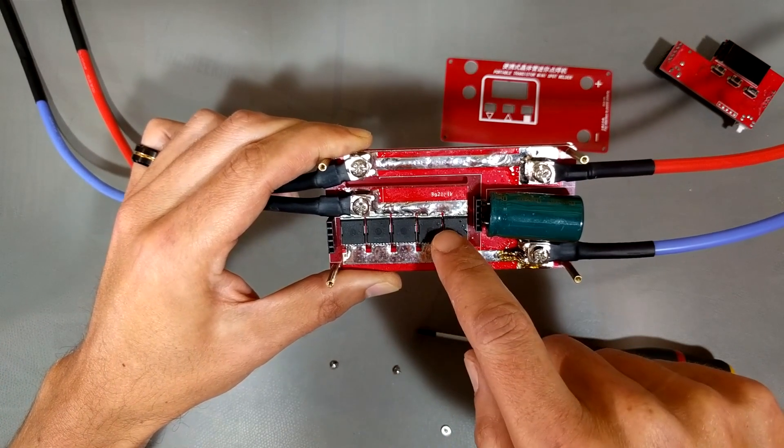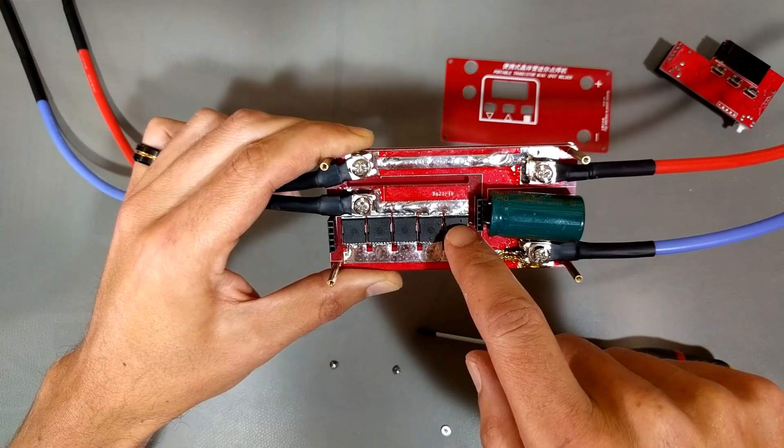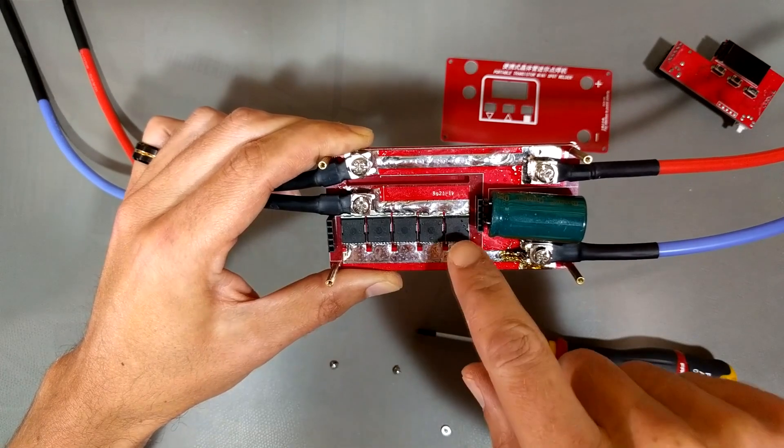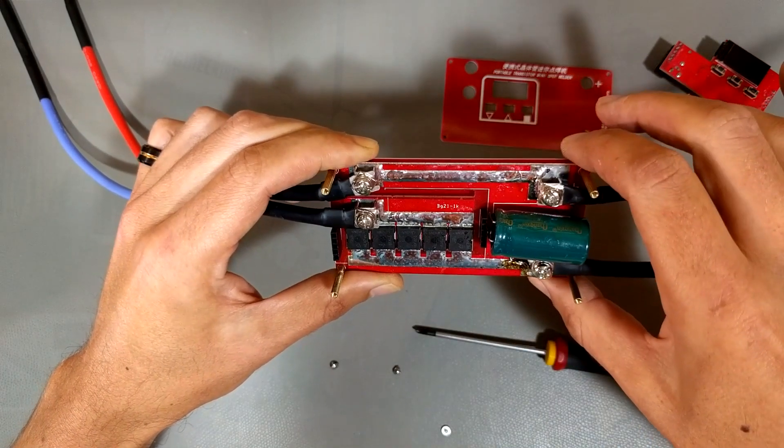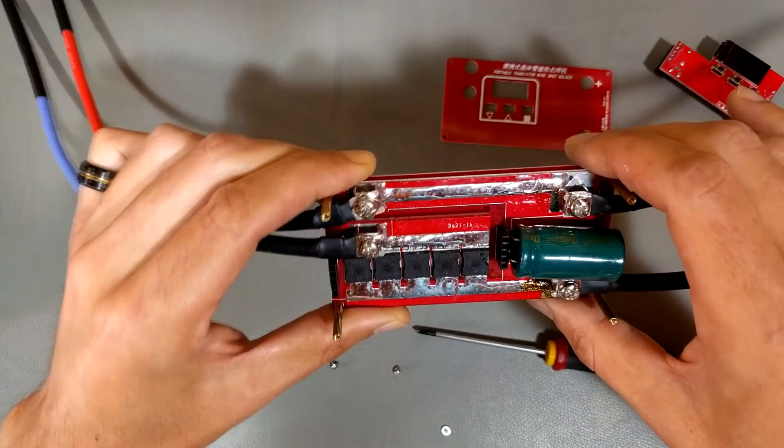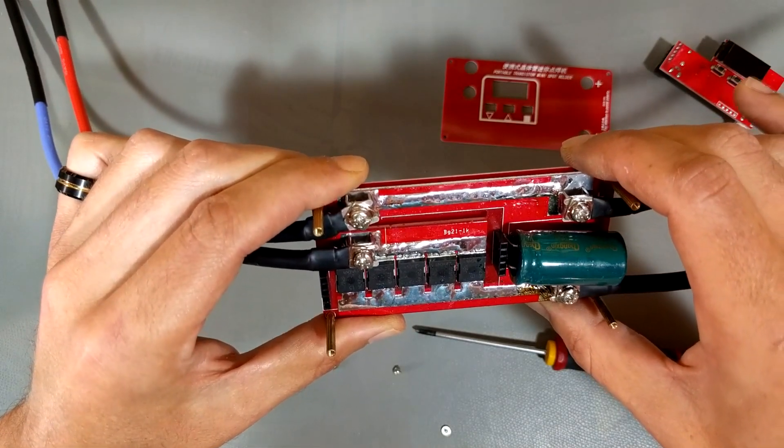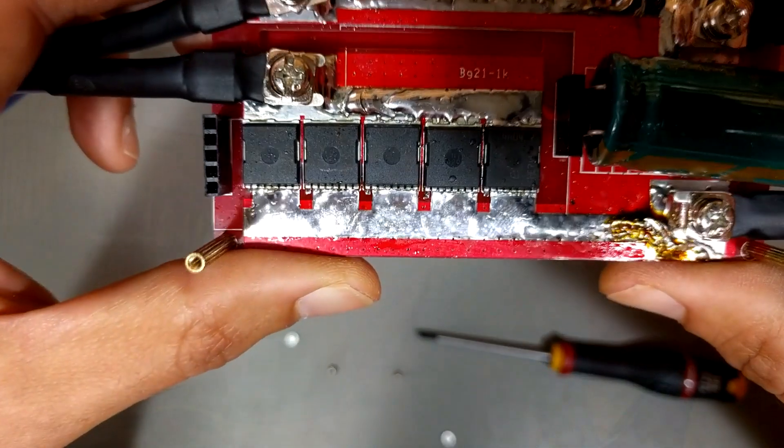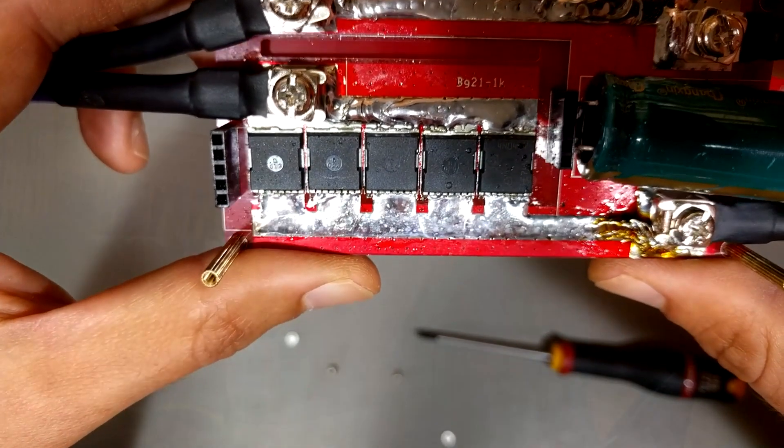Basically the positive passes through and the negative is supposed to be switched by these guys. These are basically MOSFETs. The documentation on the Banggood site claimed that they are 300-amp MOSFETs. I'm a little bit skeptical.